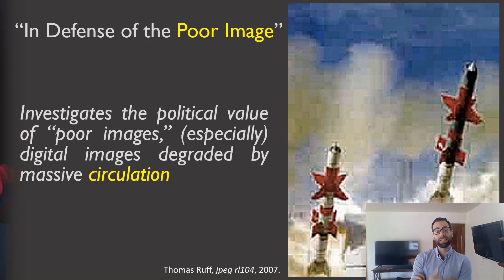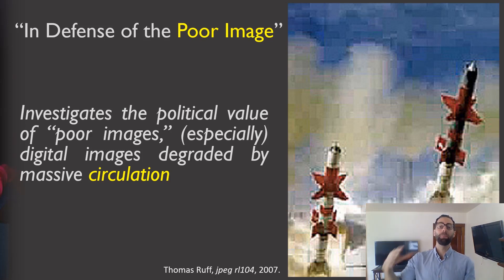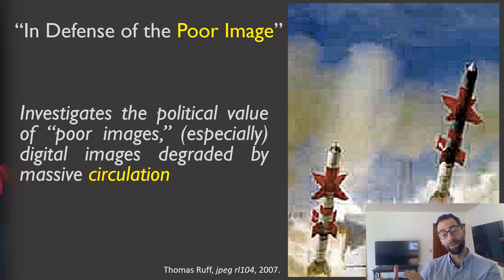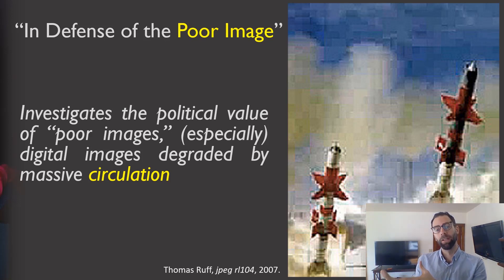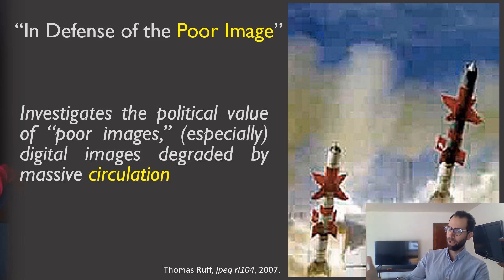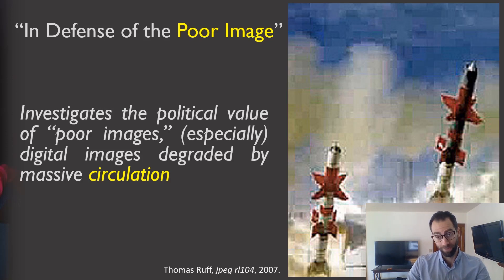One of those images is artist Thomas Ruff's JPEG RL104 from 2007. What Ruff would do is blow up images he got from the internet that were very small and compressed. When he would blow them up, you would see the pixelation and compression artifacts. This is a good example of a poor image, though ironically it's been appropriated by an artist to comment upon the very nature of poor images.